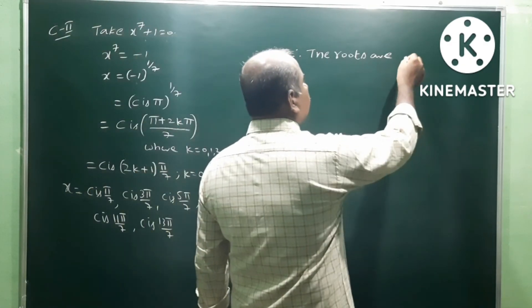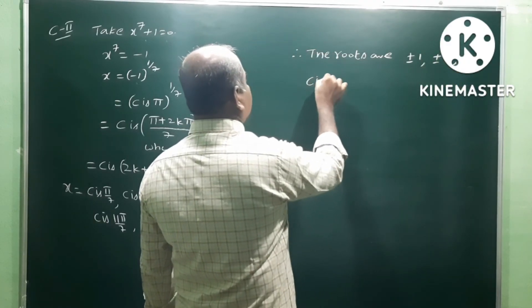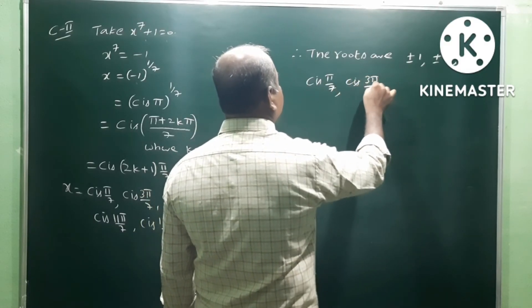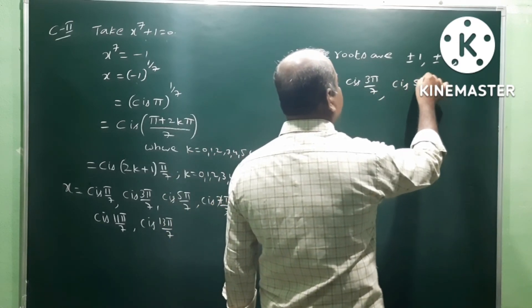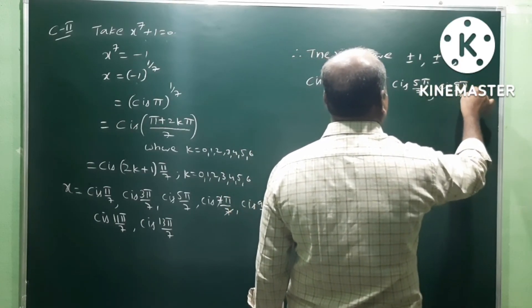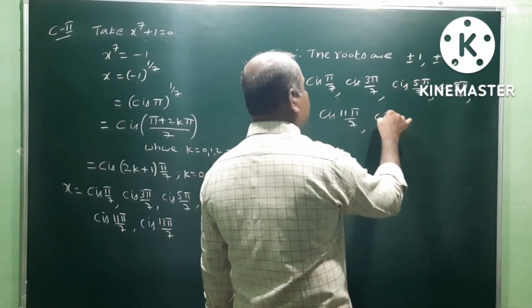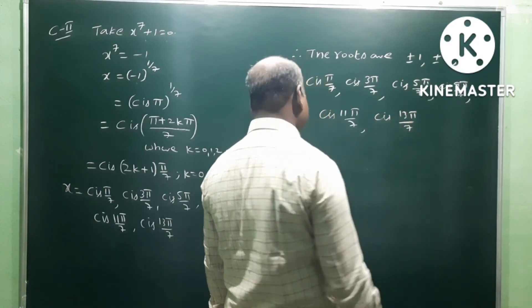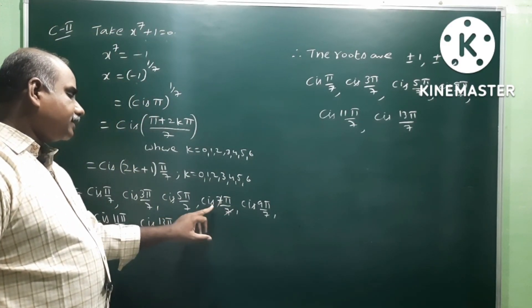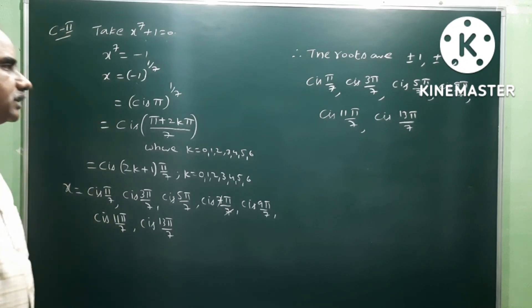Therefore all the roots of the equation are: plus or minus 1, plus or minus i, cis π by 7, cis 3π by 7, cis 5π by 7, cis 9π by 7, cis 11π by 7, and cis 13π by 7. Note that cis 7π by 7 simplifies to cis π, which is minus 1 — already included. So these are all the roots.